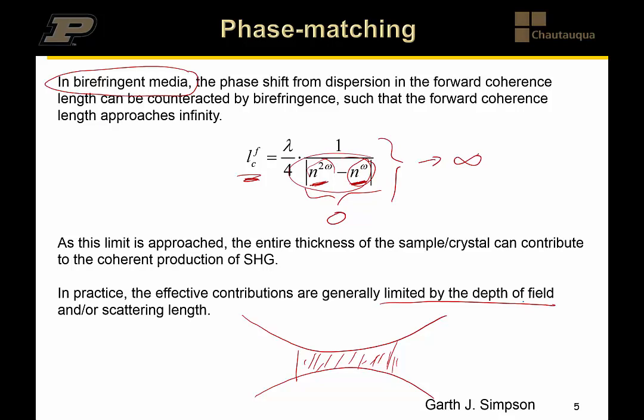It can be limited by many things, it can be limited by the forward coherence length, it can be limited by the depth of field, or if you have something that's scattering and highly turbid the total scattering length can also potentially play a role in dictating the volume of material that effectively contributes to the SHG that's detected. So phase matching matters arguably more in collimated measurements with collimated sources and for frequency conversion of optical beams than it does for microscopy where you have a fairly narrow depth of field. All right that takes me to the end.